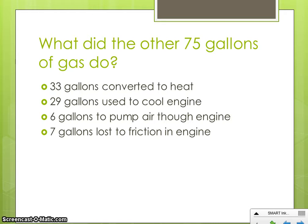Here's where that other 75% goes. About 33 of the gallons will be lost as heat — when you run your car, your engine gets really warm, and that thermal energy being given off is not being used. 29 gallons are used to cool the engine so it doesn't overheat. 6 gallons are used to pump air through your engine, and 7 gallons are lost to friction. So really only 25 gallons out of 100 are being used to actually move your car.